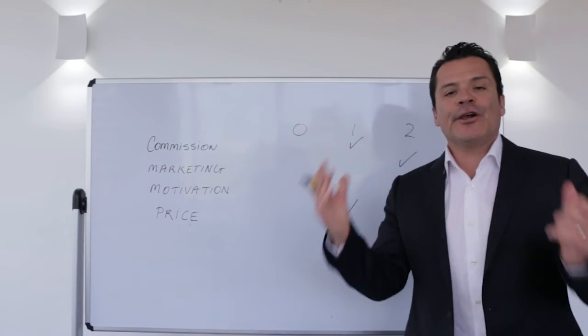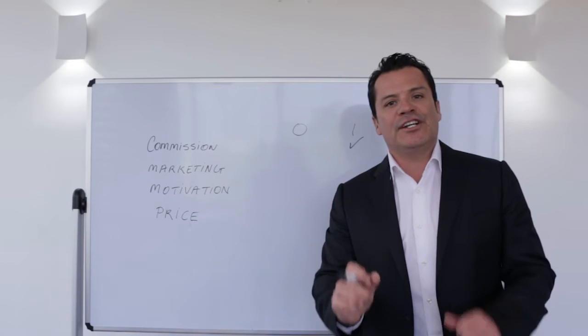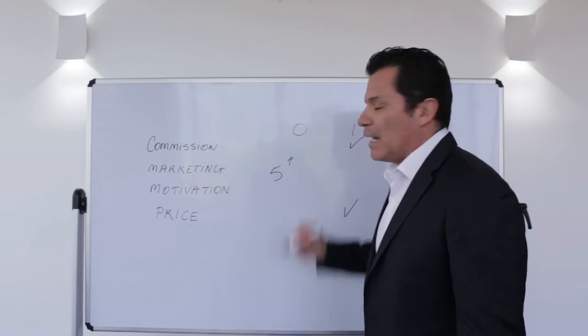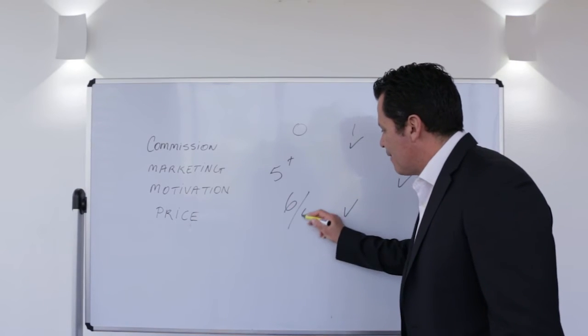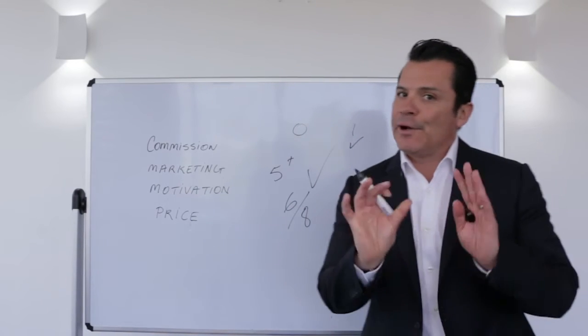Now, out of a total of 8 points, what you want to reach as a minimum is 5 points or more. Right here, in this example, we've got 6 out of 8. That's a really good listing.